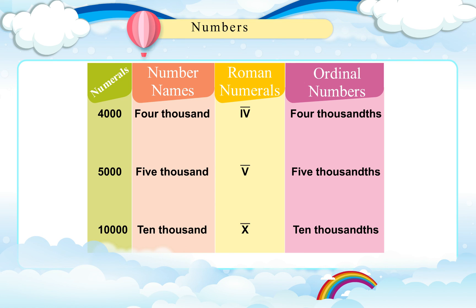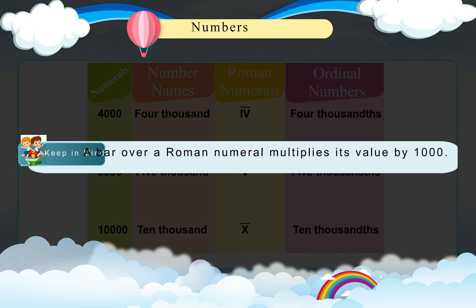5000, 10000. Keep in mind, a bar over a Roman numeral multiplies its value by 1000.